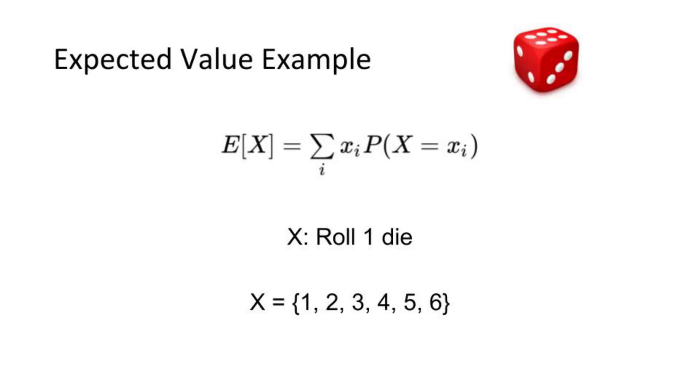Let's take an example of rolling one die. So our random variable, x, is going to be the outcome of the die. We'll need to consider all of the possible outcomes of this variable, which of course is 1, 2, 3, 4, 5, or 6.